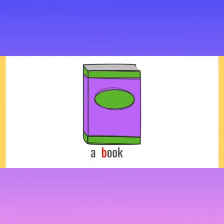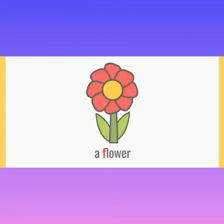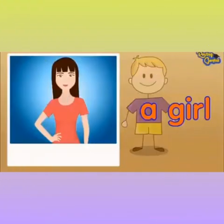Kids, what is this? Yes, this is a book. What is the starting letter? Good. B. So what should we use? Good. A. A book. Kids, what is this? Yes, dinosaur. Dinosaur starts with a consonant, D. D is a consonant. So we should use A. A dinosaur. Next, flower. Flower starts with a consonant, F. F is a consonant. So we should use A. A flower. When the words start with a consonant, before that we should use A. Next, girl. What is the starting letter of girl? G. G is a consonant. So we should use A. A girl.